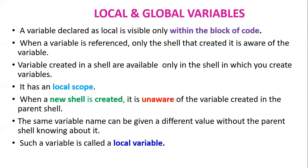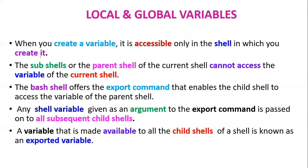A variable declared as local is visible only within the block of code in which it is defined. Variables created in a shell are available only in that shell — this is called local scope. When a new child shell is created, it does not have access to variables created in the parent shell by default. The same variable name can be given a different value in the child shell without affecting the parent shell — such a variable is called a local variable.